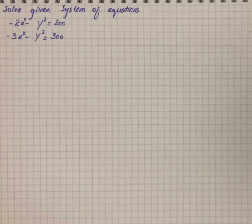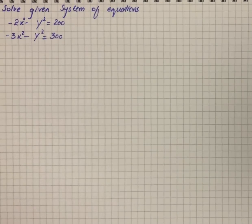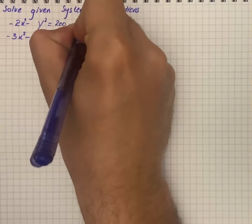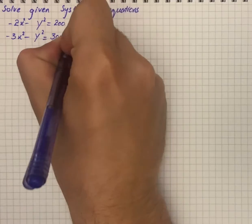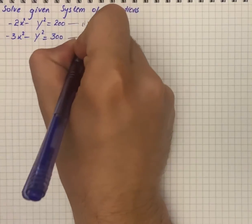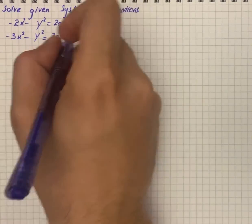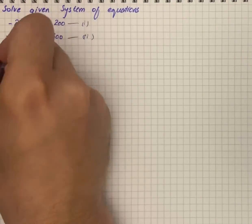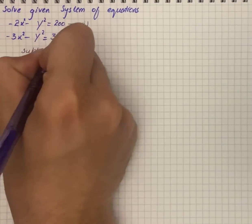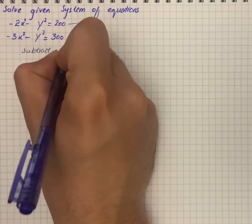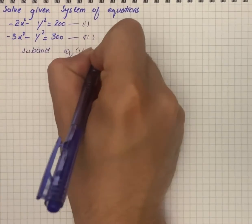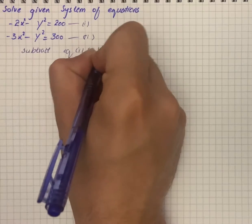Here we have a system of equations to solve. First of all, we will name this equation as number 1 and this one as number 2. We will subtract equation 1 from equation 2.